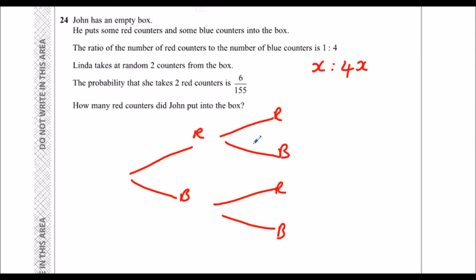So the chance of getting a red counter the first time. So how many in total? So the total is 5x, because I've got x reds, I've got 4x blue, so I've got 5x in total. So I've got x out of 5x, which is the same as a fifth, but I'll leave it at that for now.